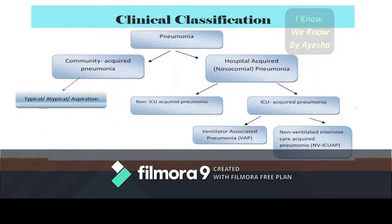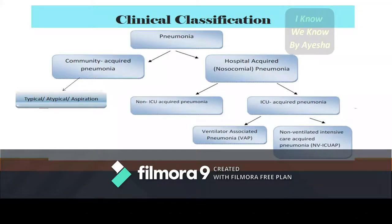Clinically, pneumonia can be classified as community-acquired pneumonia, atypical pneumonia, and aspiration pneumonia, whereas hospital-acquired pneumonia is known as nosocomial pneumonia. This can be further divided into non-ICU acquired pneumonia or ICU-acquired pneumonia. If the patient is admitted in the ICU, there is a higher chance of ventilator-associated pneumonia or non-ventilator-associated pneumonia.